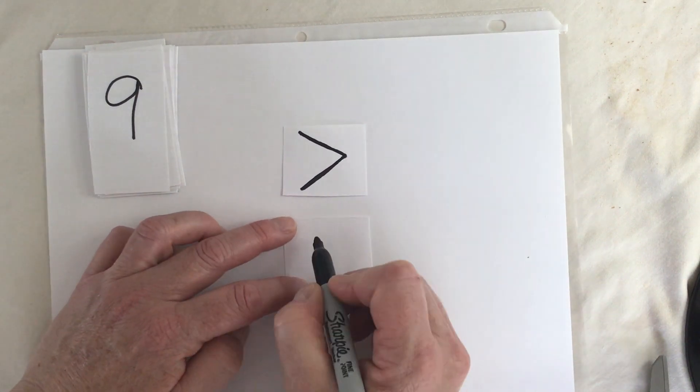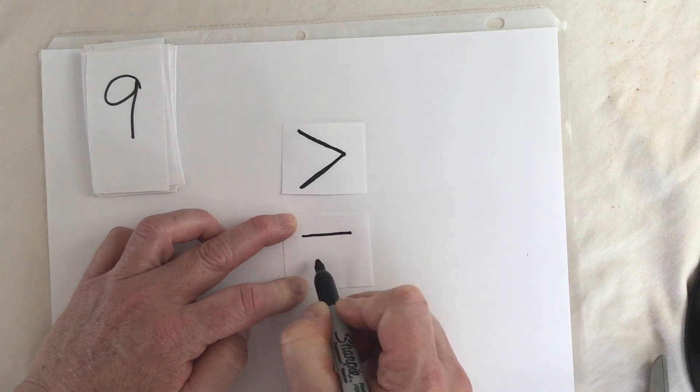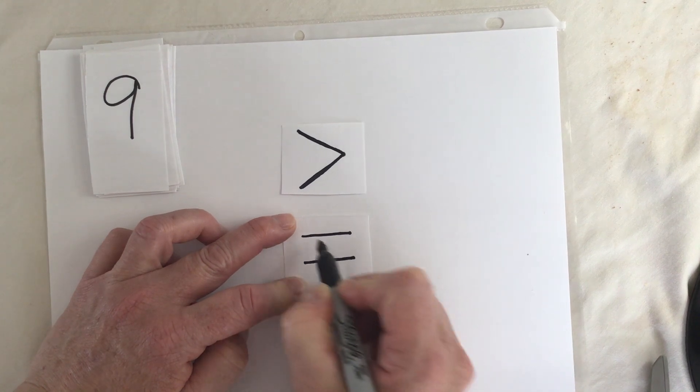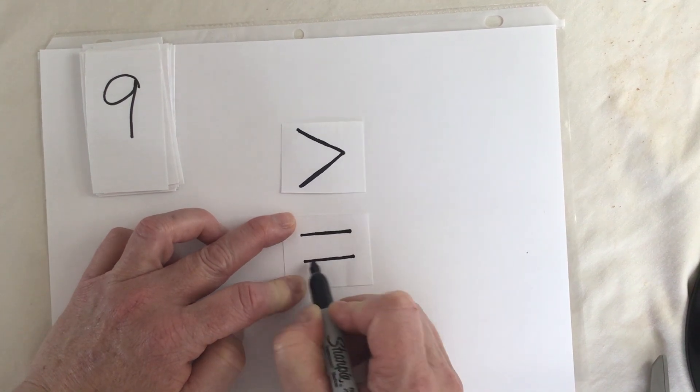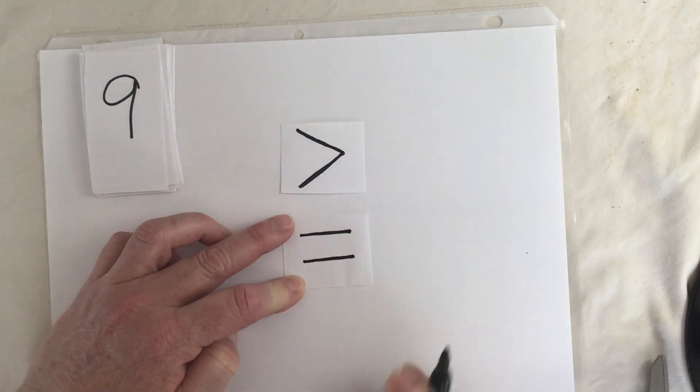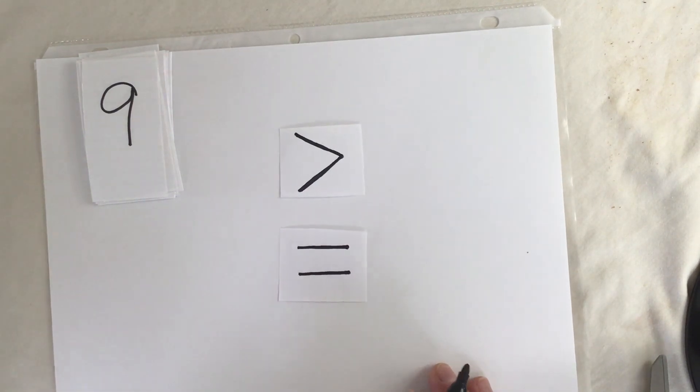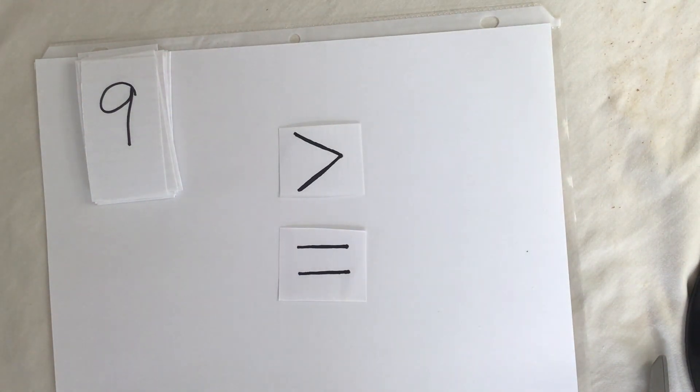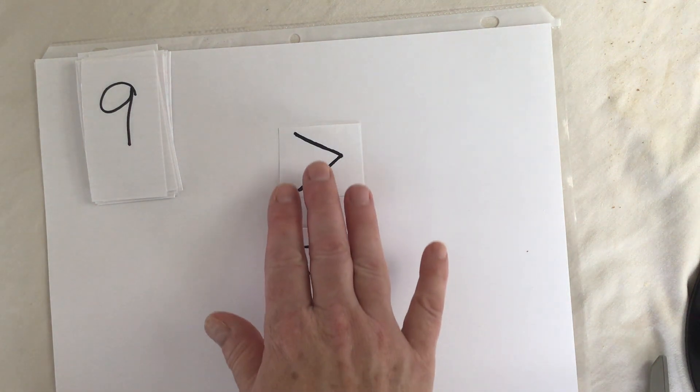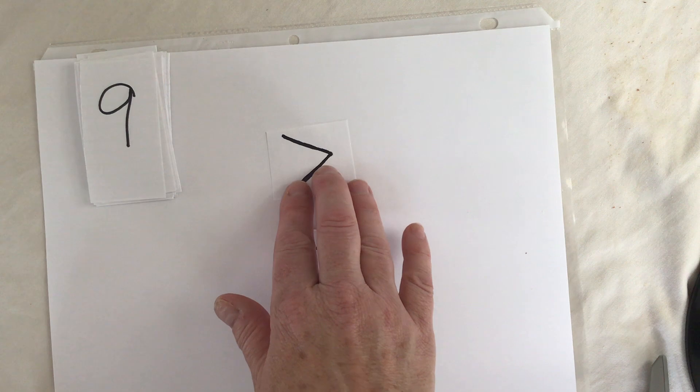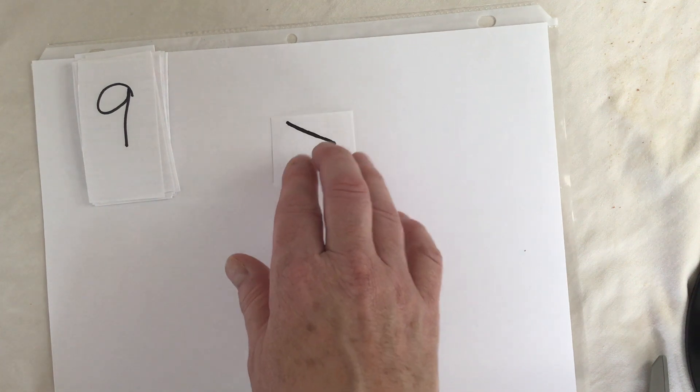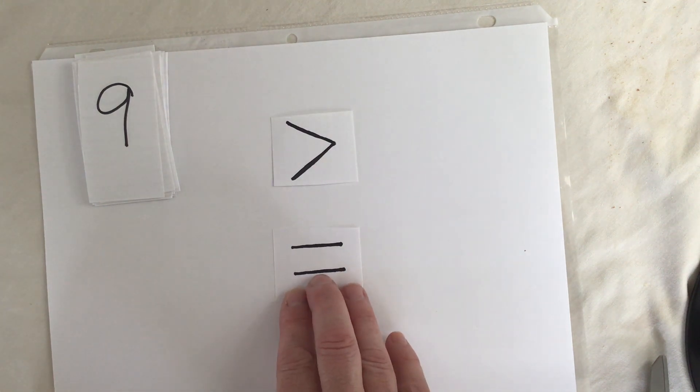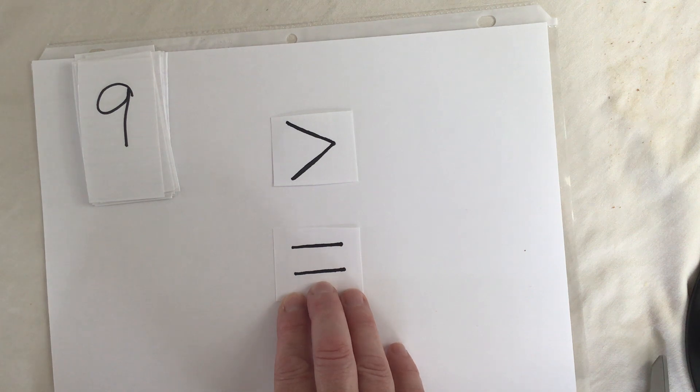The other symbol we need today is our equal sign. So today we are going to compare numbers to 100 using symbols. We'll use the greater than or less than sign, or if the numbers are the same, we'll use the equal sign.